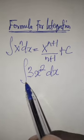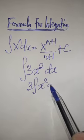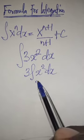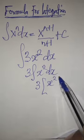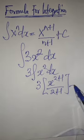What you need to do is take the integral of this. This is constant: 3 integral of x squared dx, which becomes 3 into x to the power of 2 plus 1 over 2 plus 1, plus constant c.